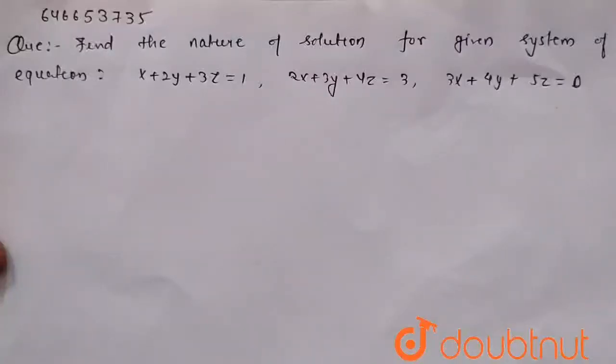Hello everyone, in this question find the nature of solution for the given system of equations. x plus 2y plus 3z equals 1, 2x plus 3y plus 4z equals 3, 3x plus 4y plus 5z equals 0.